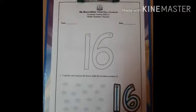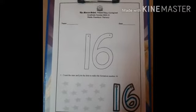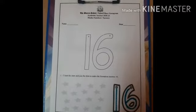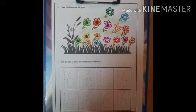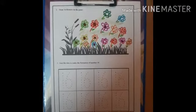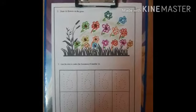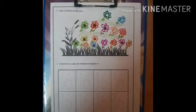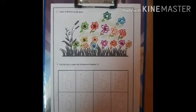And then trace number 16 like this. Second question: draw 16 flowers on the grass. So kids, you have to draw 16 flowers to make this garden beautiful.